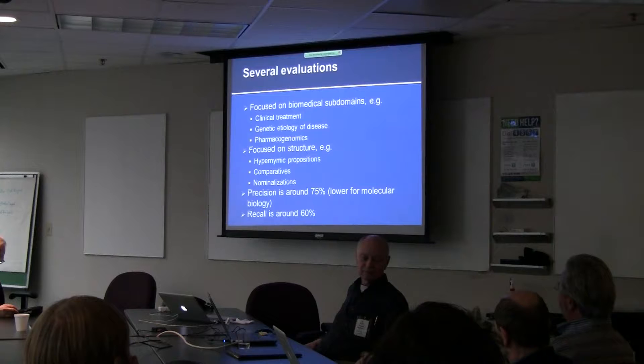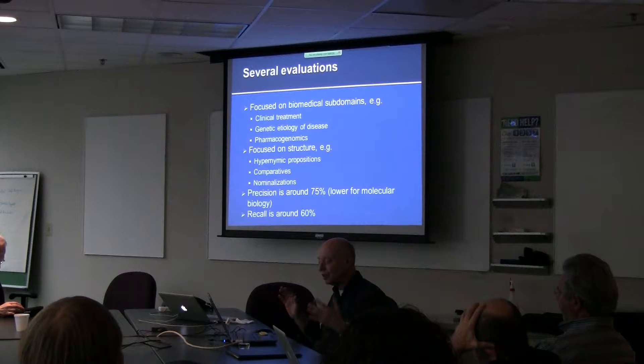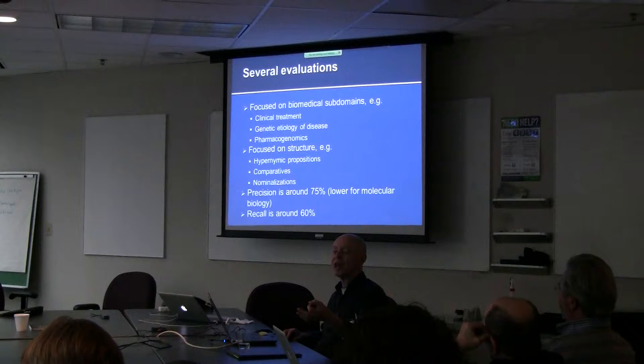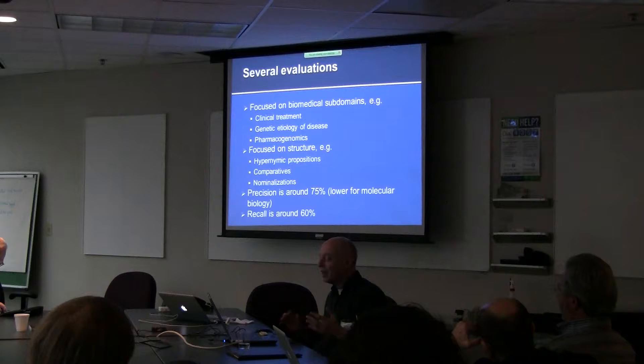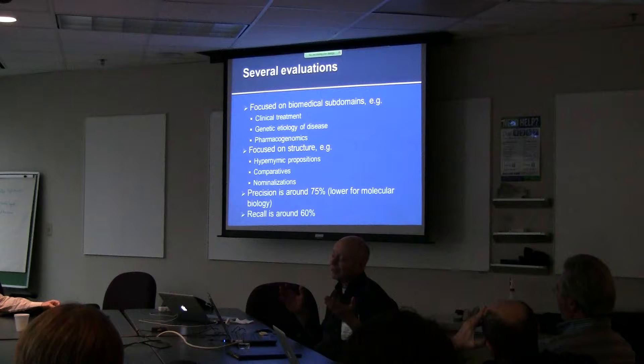This is what I talk about with incremental development. We've done various evaluations either focused on biomedical subdomains or on structure, and they all seem to come out at roughly 75% precision. That is, if we give you a triple, what's the chance that it's what the text actually said — not whether it's God's truth, but that the person actually asserted that. It's roughly around 75%, and recall about 60%.